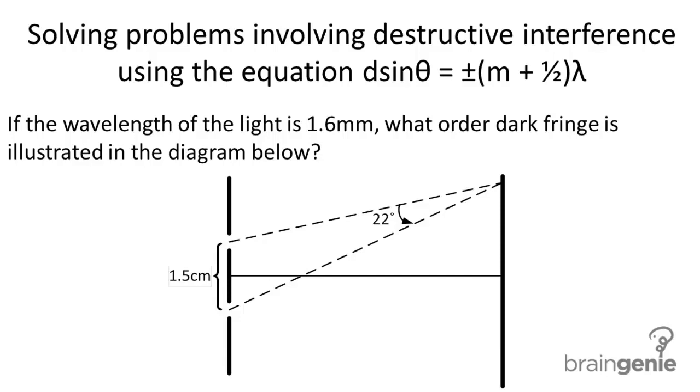Solving problems involving destructive interference using the equation d sin θ = (m + 1/2)λ. If the wavelength of light is 1.6 millimeters, what order dark fringe is illustrated in the diagram below?